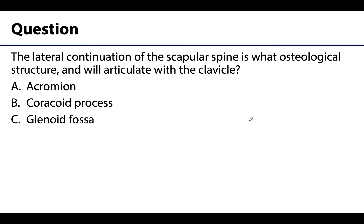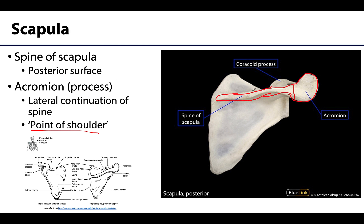Question regarding the pectoral girdle bones: the lateral continuation of the scapular spine is what osteological structure, and this structure articulates with the clavicle? The coracoid process is more anteriorly placed and is not a continuation of the scapular spine. The glenoid fossa is the socket of the glenohumeral joint and is not a continuation of the spine. That leaves the correct answer: the acromion or acromial process — you can clearly see the spine of the scapula continuing and expanding into the acromion.